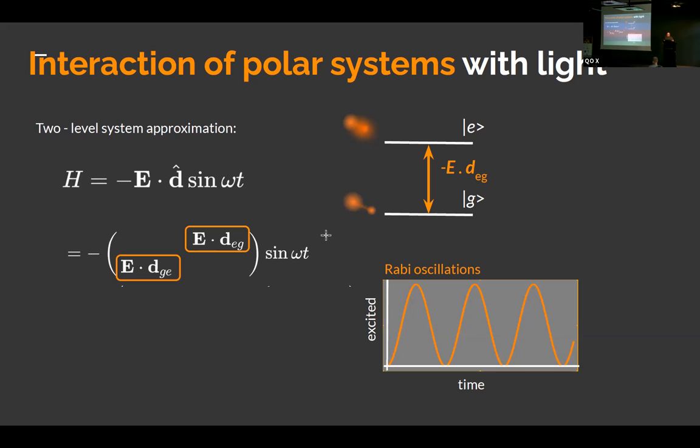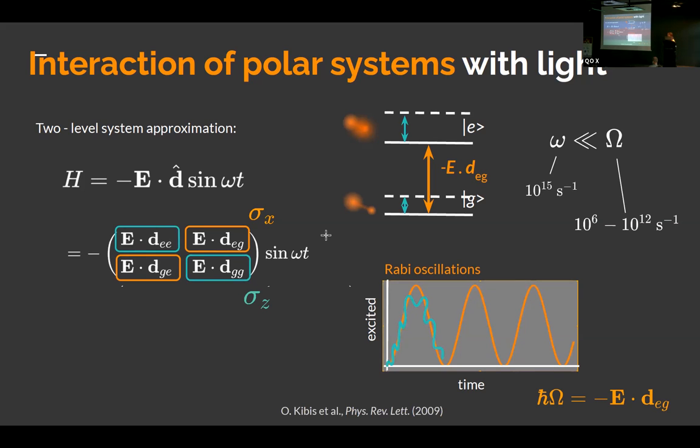But now, if additionally you have permanent dipoles, you have additional terms in the Hamiltonian. And these terms do not induce transitions. They are on the diagonal. These extra terms induce some energy shifts. And these energy shifts here are in phase, because they are driven by the same sinusoid, but they have different amplitude. And what it does to these Rabi oscillations is this oscillation here will induce some sort of detuning, some fluctuating detuning. And then when the detuning fluctuates, you also have a fluctuating Rabi frequency.